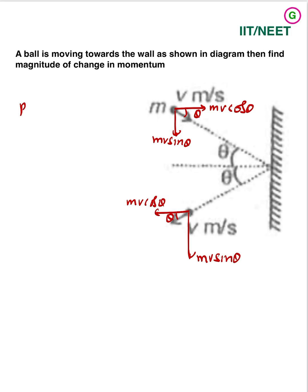So that means here p initial, momentum mv cos theta in positive x-axis direction. Momentum is a vector.